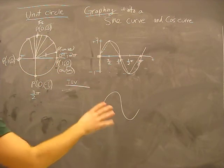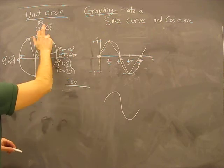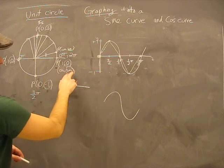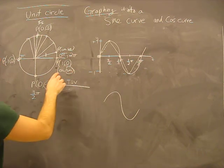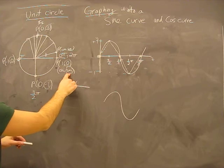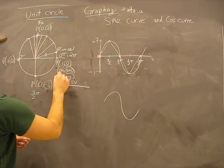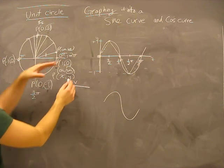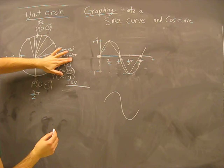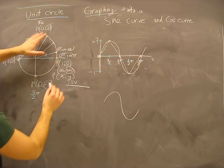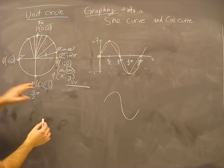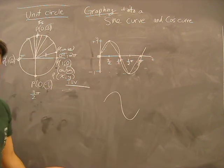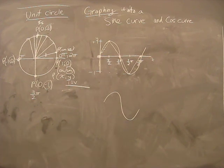So that's sine — dealing with the second term of our P, our y-value. Our sine value is always the height: no matter what our radian measure was — pi halves, whatever — our height would be our sine value. That's what we graph on here. Cosine graph introduction coming in the next video.